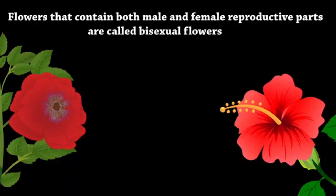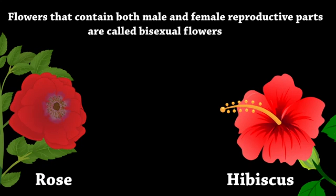Flowers that contain both male and female reproductive parts are called bisexual flowers. Hibiscus and rose are some examples of bisexual flowers.